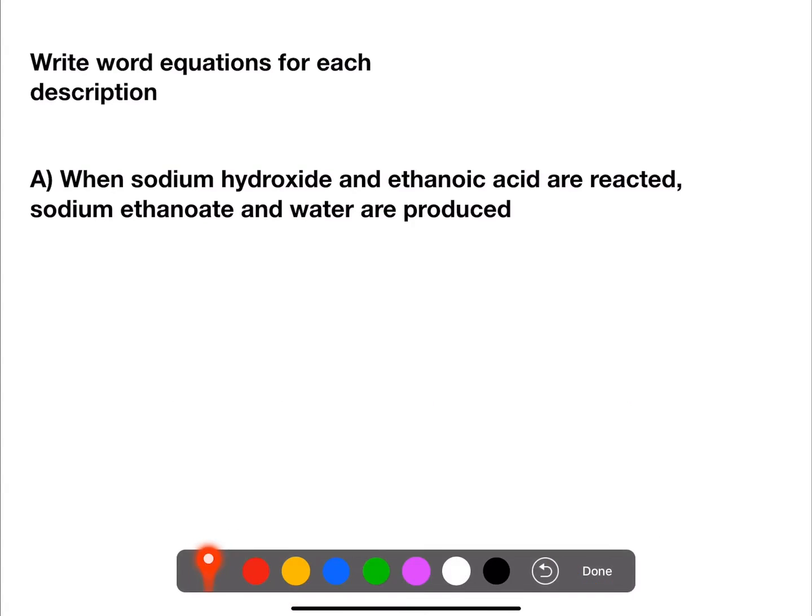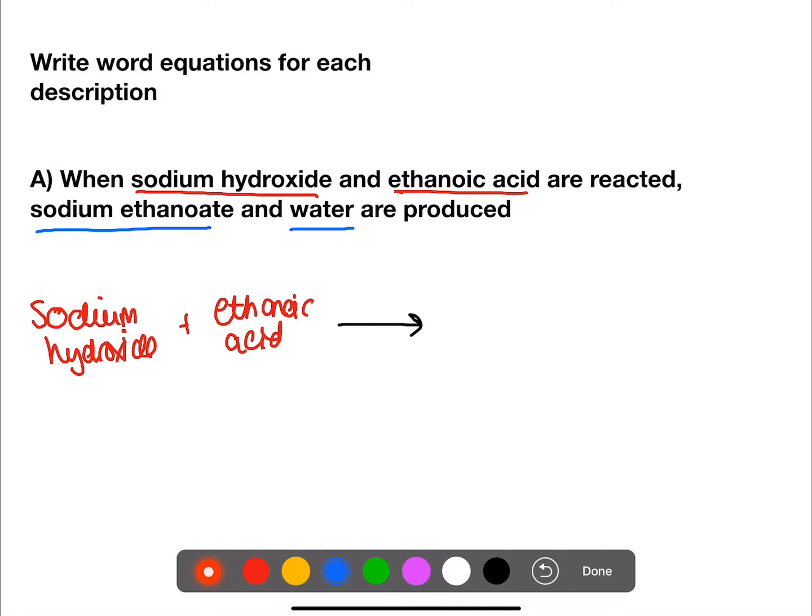So for the first reaction, we have when sodium hydroxide and ethanoic acid are reacted. So they are our reactants. Sodium ethanoate and water are produced. So on the left hand side, we will have sodium hydroxide and ethanoic acid. Then we'll have an arrow and that is producing sodium ethanoate and water.